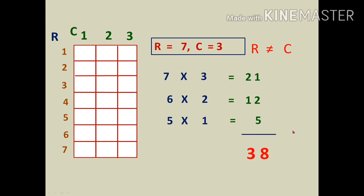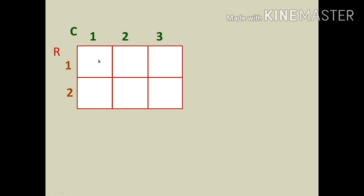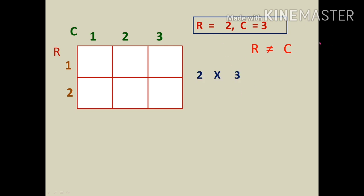Another problem: r = 2, c = 3, r ≠ c. Multiply 2×3, then subtract 1 from each to get 1×2. Since r becomes 1, stop. Find the values: 2×3 = 6, 1×2 = 2. Adding 6 and 2 gives 8. The total number of squares in this image is 8.